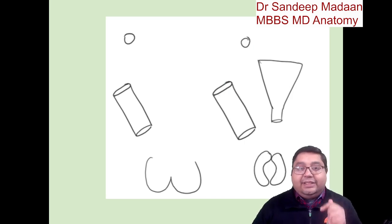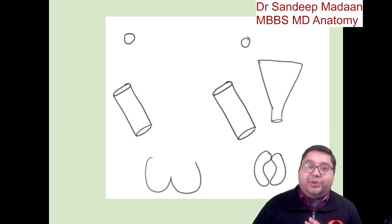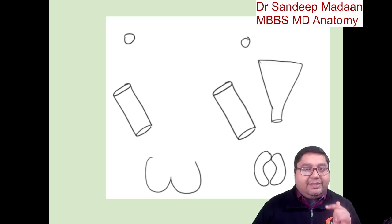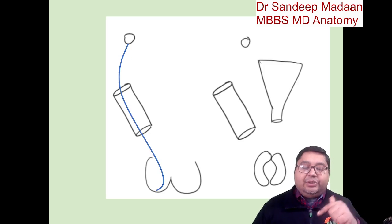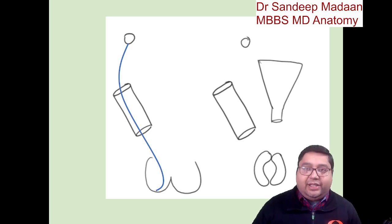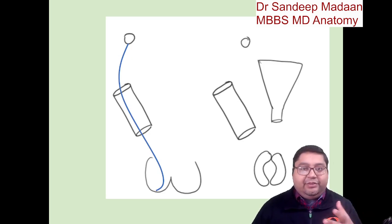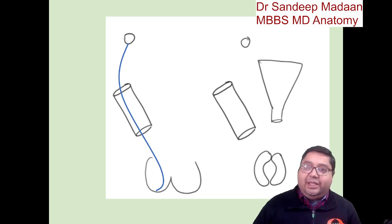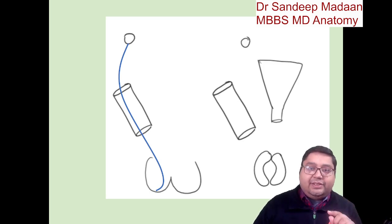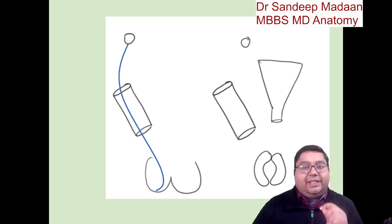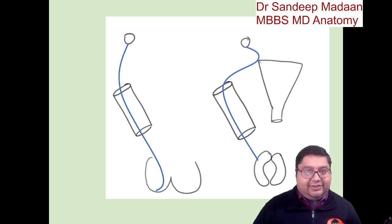One thing additional in case of female is the uterus. So when we place the gubernaculum in position, the gubernaculum is actually present from the gonad up to the labioscrotal swelling — in case of male it will be the scrotum, in case of female it will be the labia. So in case of female, gubernaculum will be present just like in males, but the only difference is that on its way, it will touch the uterus.